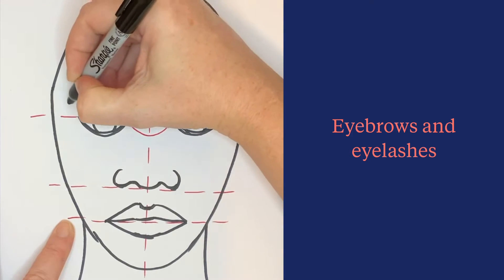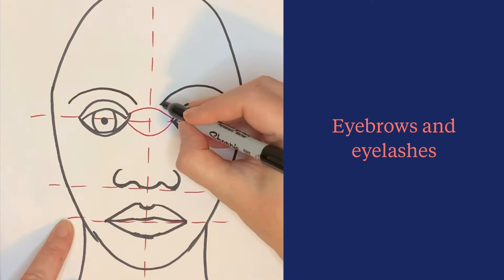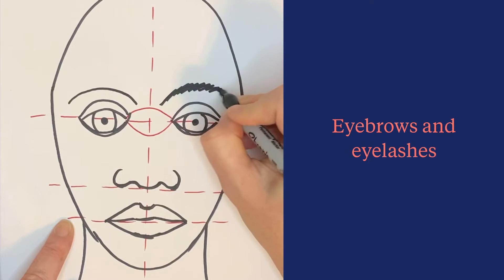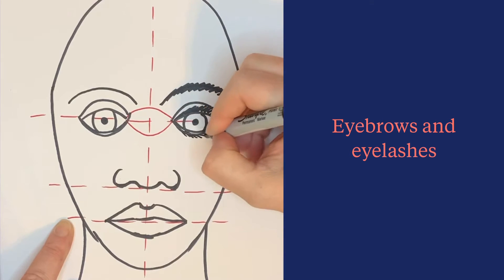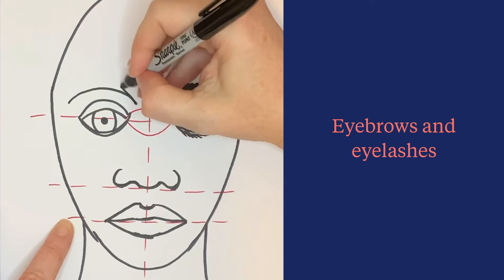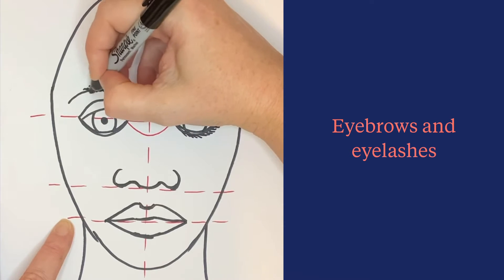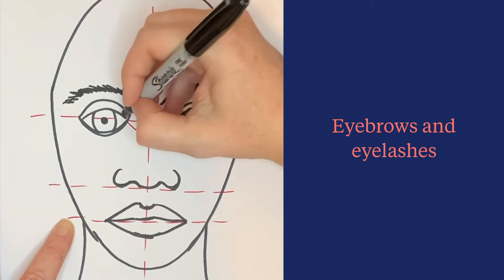Add lines in a slanted format - lines on the right point to the right, lines on the left point to the left. The eyebrows and eyelashes should be close together and angled.